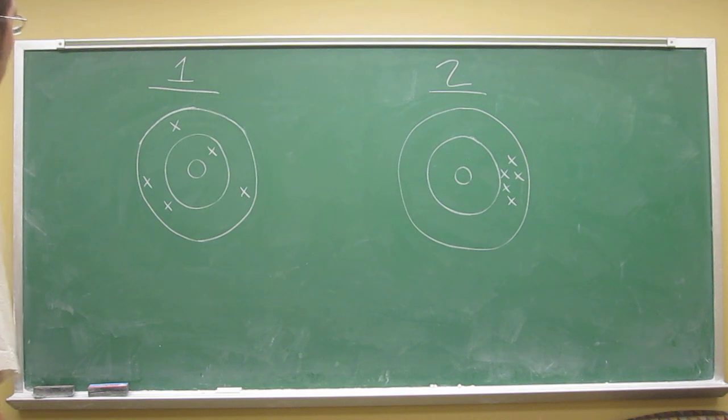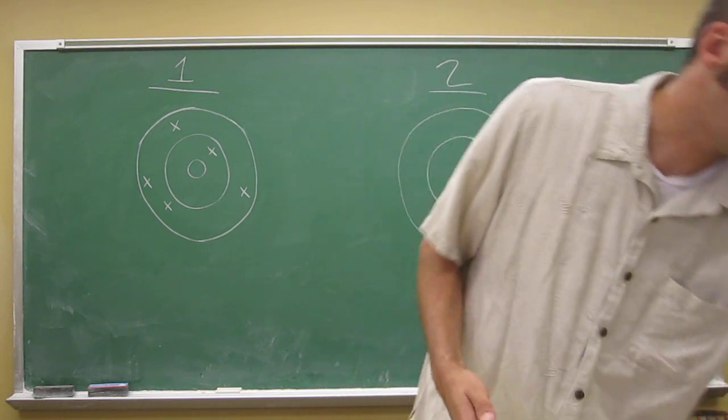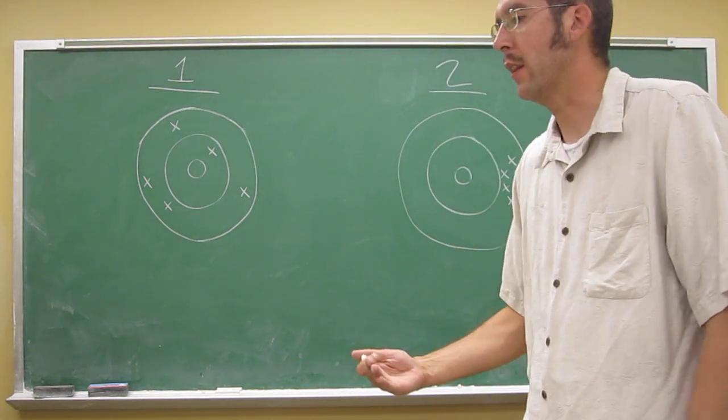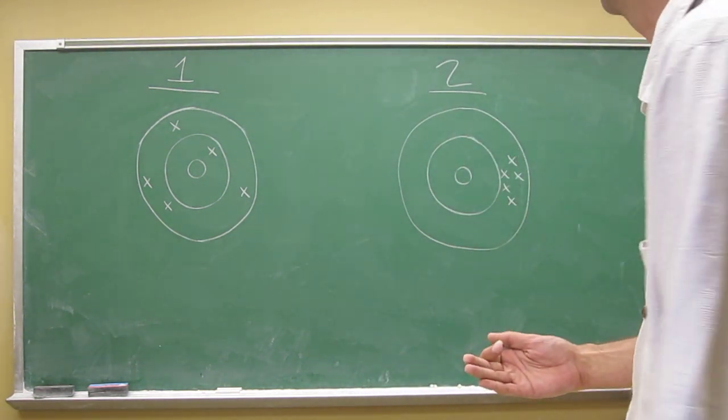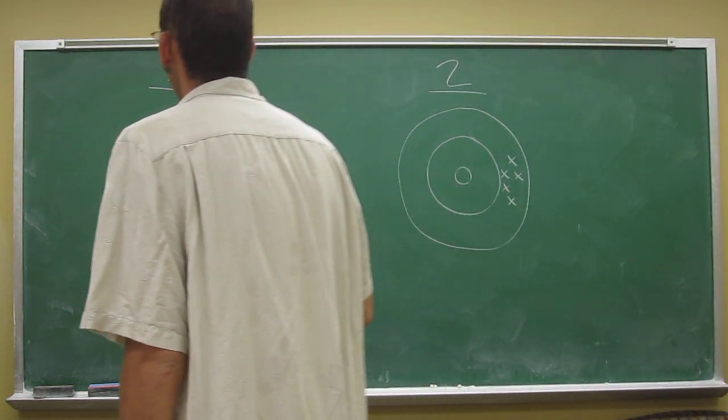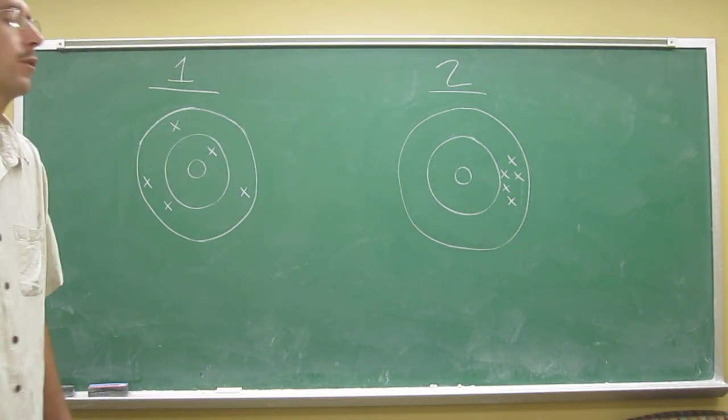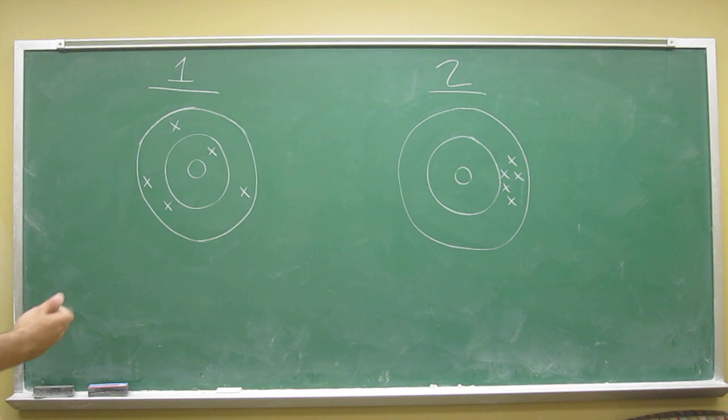Recall what we talked about with systematic error is where there's something wrong with the equipment that you're measuring with. So all of your measurements are going to be off either above or below the true value. In the case of darts, they'll be off kind of collected in one area.